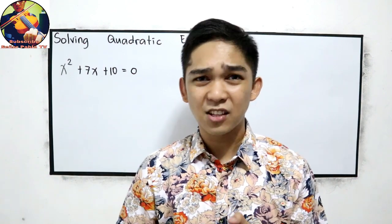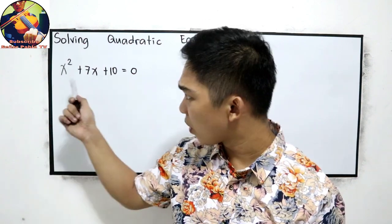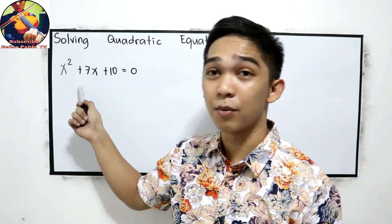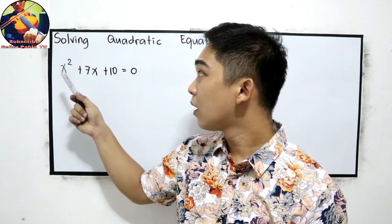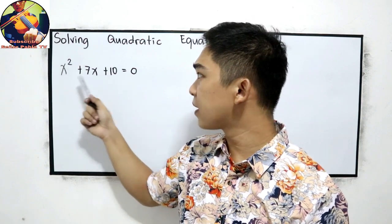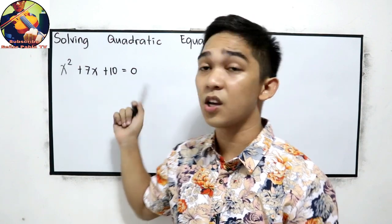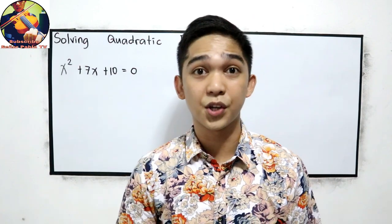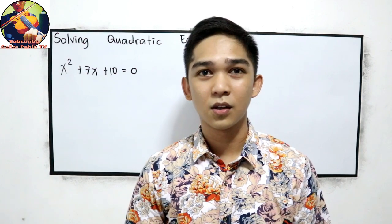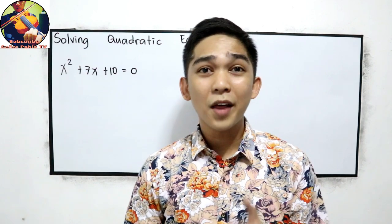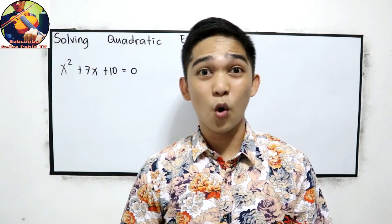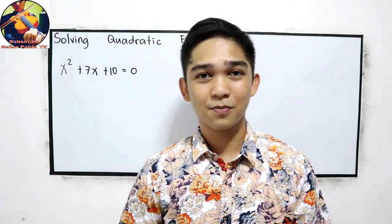What if your teacher asks you to solve this problem: x squared plus 7x plus 10 is equal to 0? What method are you going to use?